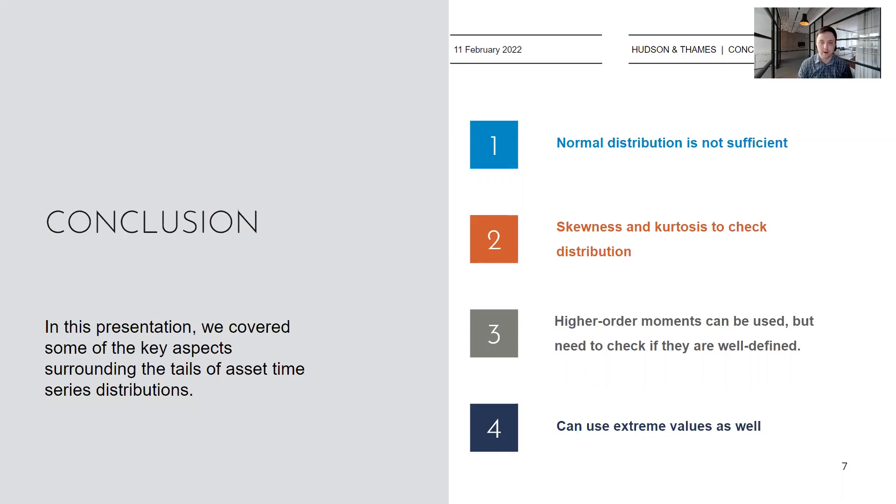In the third point, we argued that you can use higher order moments to try and answer interesting questions concerning your data, but one needs to be careful. One needs to confirm if these higher order moments do indeed exist. In the previous slide, I outlined a method to check this by writing your higher order moments as a function of the sample size n. This was another idea that came from Mandelbrot.